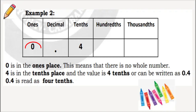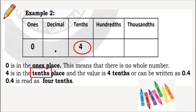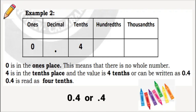This time, 0 is in the 1's place, which means that there is no whole number. Digit 4 is in the 10's place, and the value is 4 tenths, or can be written as 0.4. The number 0.4 is read as 4 tenths.